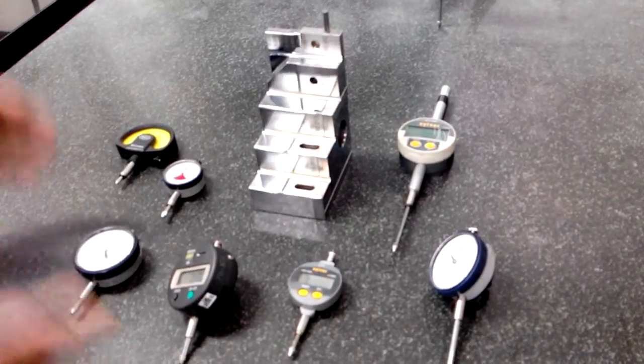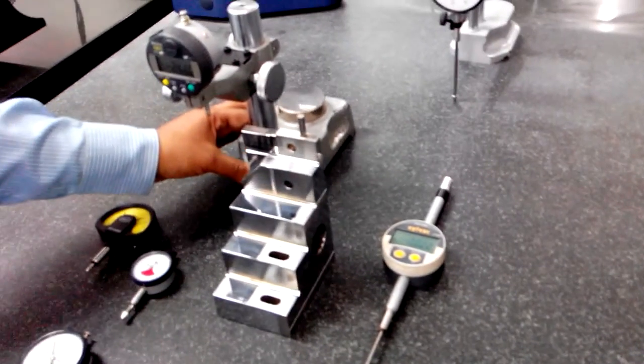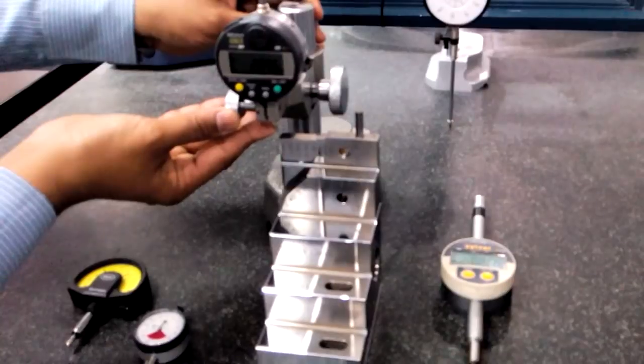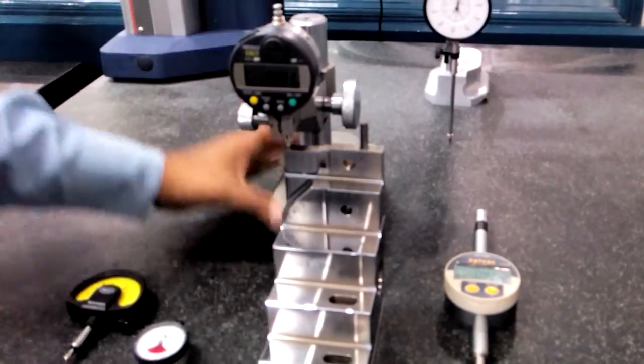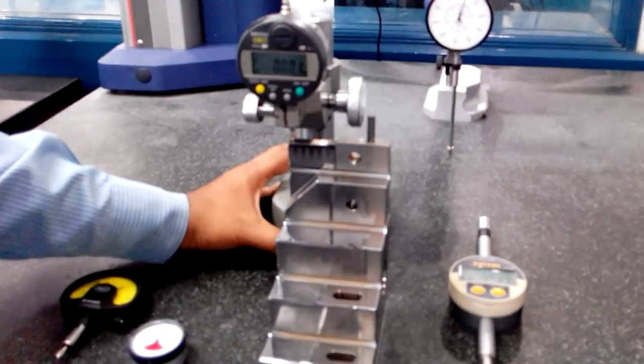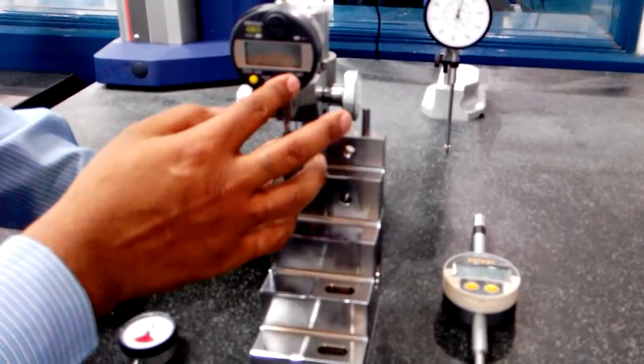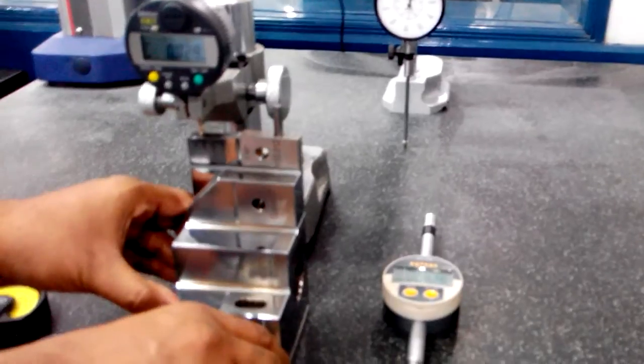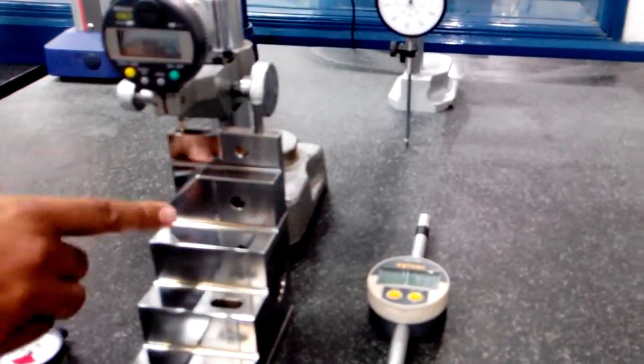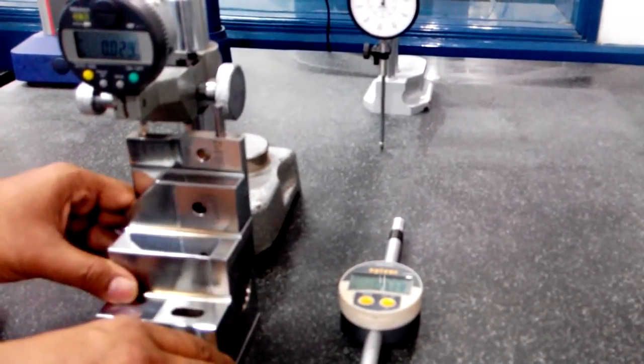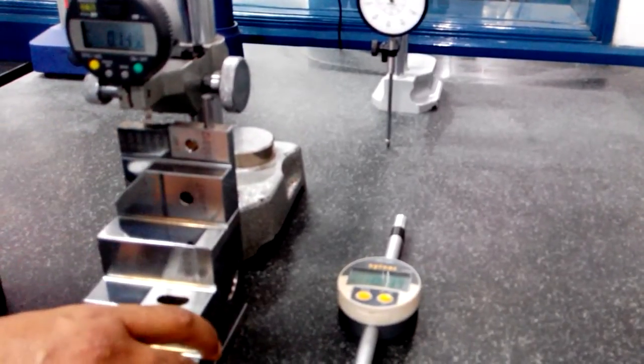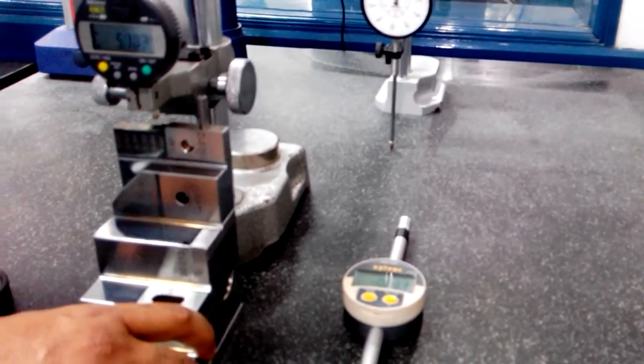I will show you how you can start. Just take one dial stand or height gauge and put your dial in this and make the first step zero on the quick check. Now slide slowly the quick check and see the difference of reading: 28 micron, 63 micron, 146 micron, 500 micron, and so on.